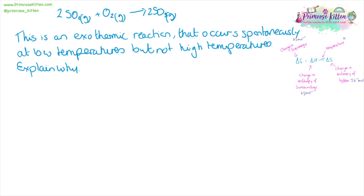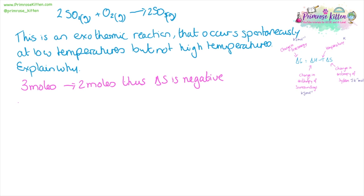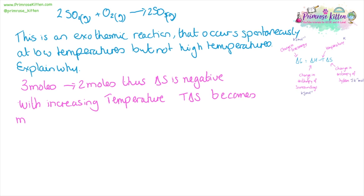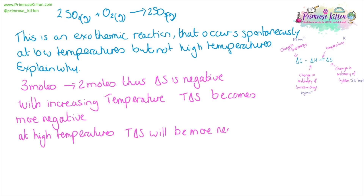You may be given a reaction but no numbers. Here we have an exothermic reaction that occurs spontaneously at low temperatures but not at high temperatures — explain why. We are going from three moles to two moles, so delta S is negative. Because delta S is multiplied by minus T, increasing temperature makes the T delta S term more negative, and at higher temperatures the T delta S term will be more negative than delta H, making delta G positive and the reaction no longer feasible.